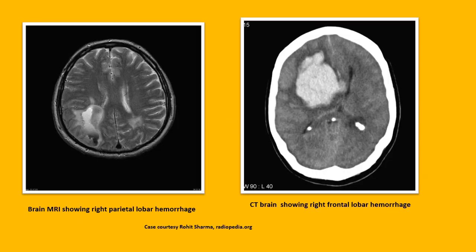This picture on the left shows a brain MRI with a right parietal lobar hemorrhage, and on the right side shows a CT brain showing a right frontal lobar hemorrhage.